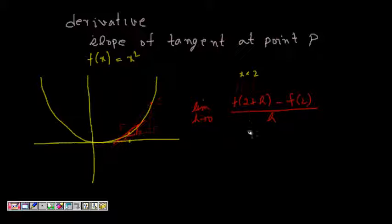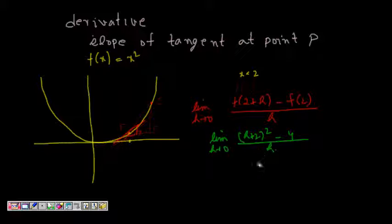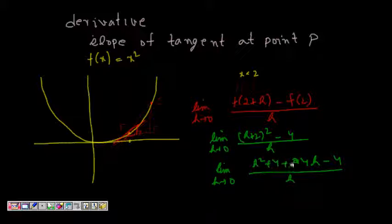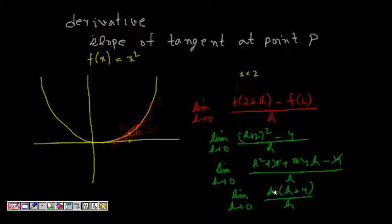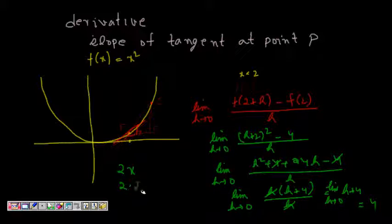Evaluating this: f(2+h) is (2+h) squared, and f(2) is 4. So we get the limit as h tends to zero of (2+h) squared minus 4 divided by h. Expanding: (4 + 4h + h²) minus 4 gives 4h + h², divided by h. The 4 cancels, leaving limit as h tends to zero of h + 4, which equals 4. And indeed, if you know the derivative of x² is 2x, at x equals 2 that is 4.